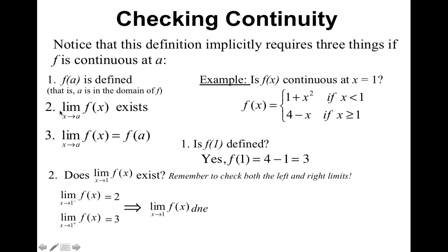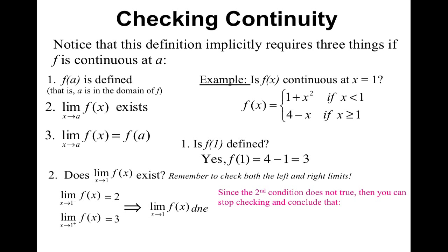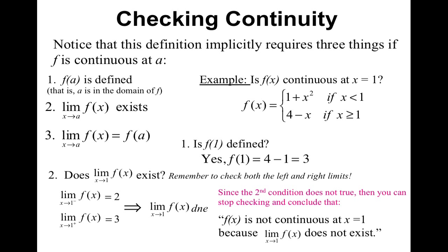Since the limit does not exist, we do not have to check step 3. You can stop there and conclude that f of x is not continuous at x equals 1, because the limit as x approaches 1 of f of x does not exist. When you conclude, don't just say yes or no — give a reason why.